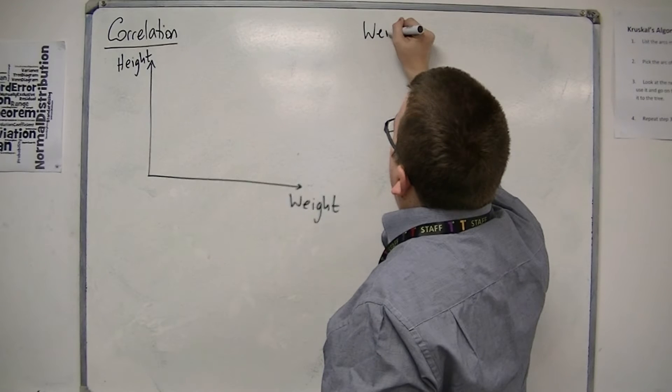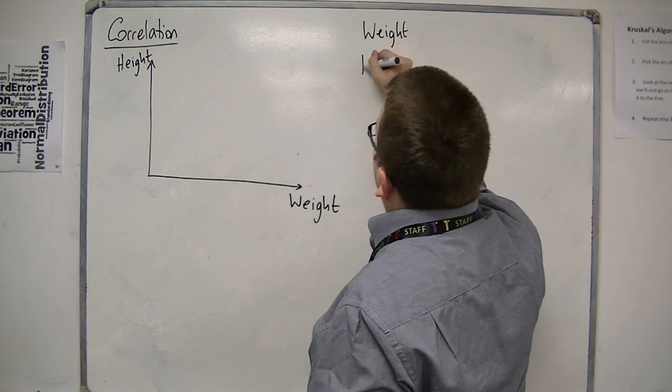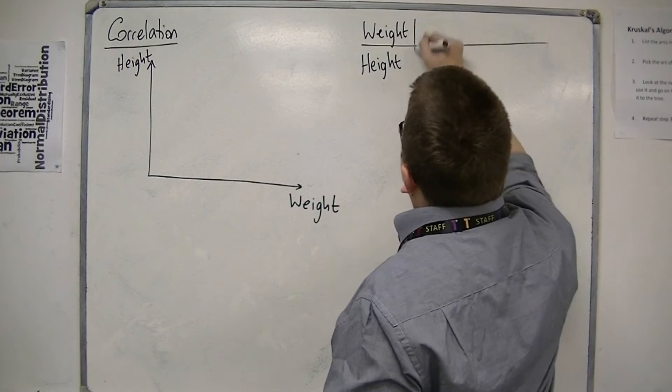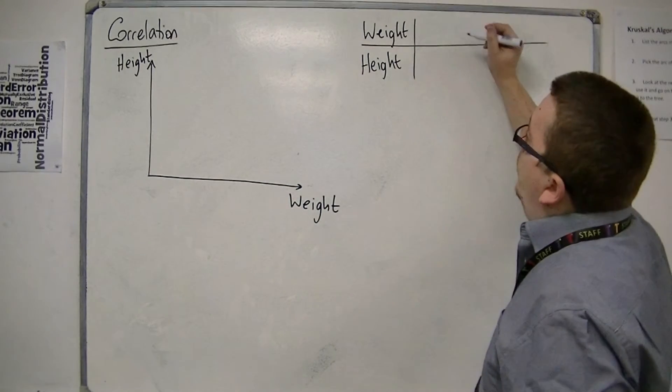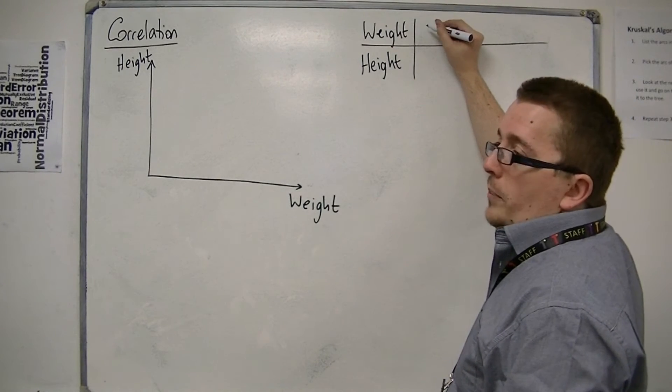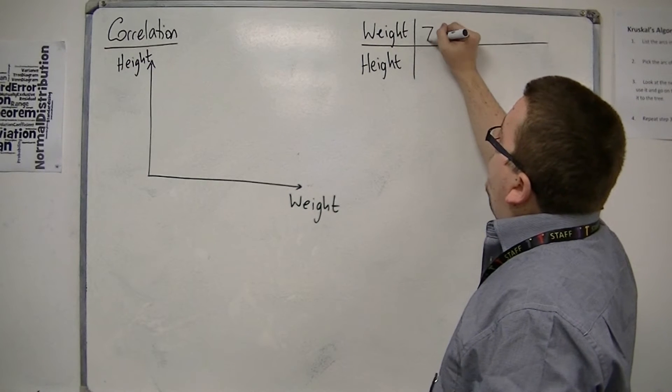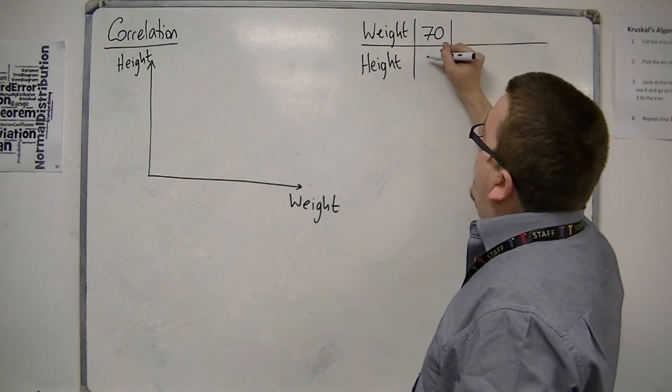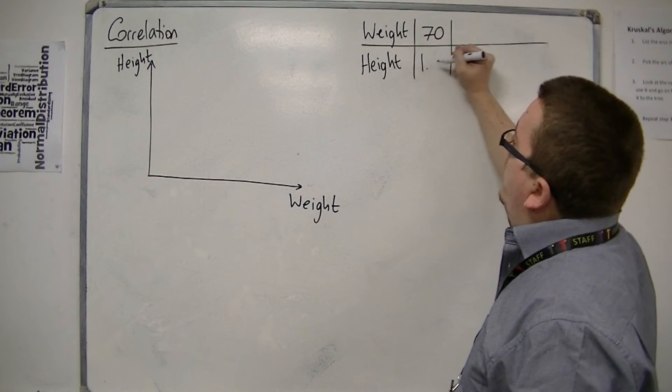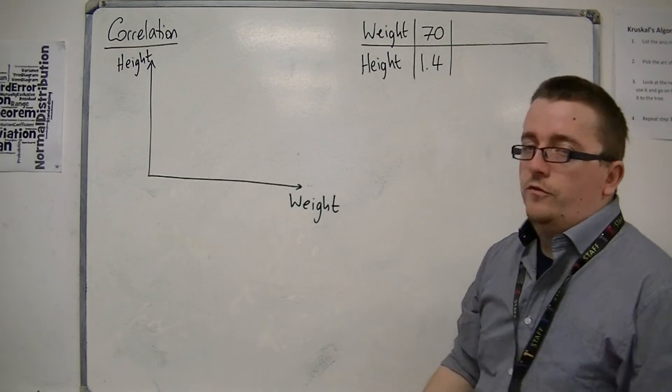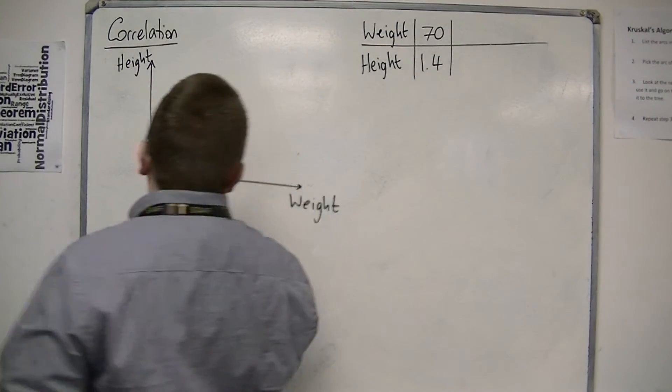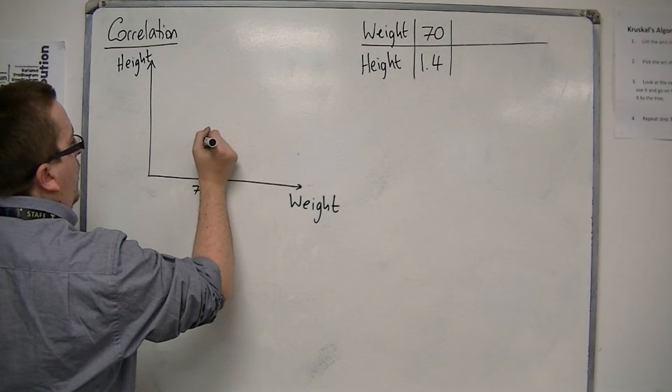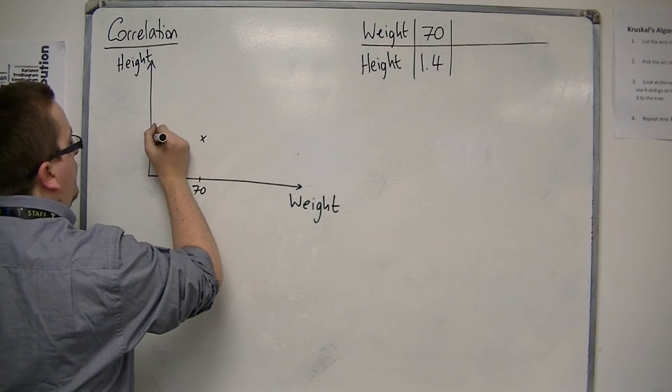And you might have the weight and height of specific people. So for example, the weight of one person might be 70 kilos, and their height might be 1.4 meters. So we would go along to 70 and then go up to 1.4.